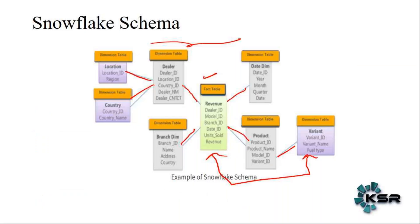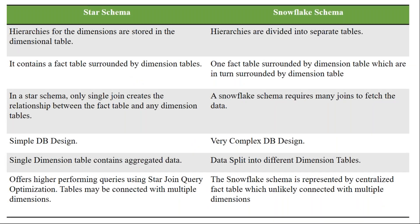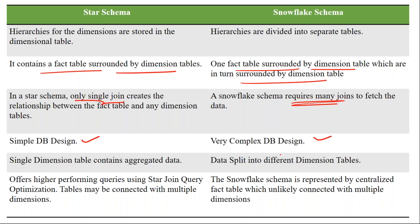This is also a common interview question — they will ask you what modeling you have implemented, which is the best optimized technique or which is easier. The difference is: in star schema, the fact table is surrounded by dimension tables. In snowflake schema, the fact table is also surrounded by dimension tables, which can in turn be surrounded by more dimension tables. In star schema, only one join is enough because you connect your fact table directly with all dimension tables. But in snowflake schema, multiple joins may be required since a dimension table also has to be connected to another dimension table. Star schema is a simpler design whereas snowflake becomes more complex. Most importantly, star schema performs well and is a well-optimized technique compared to snowflake schema.